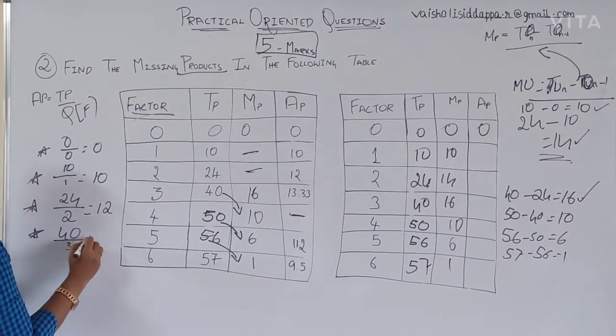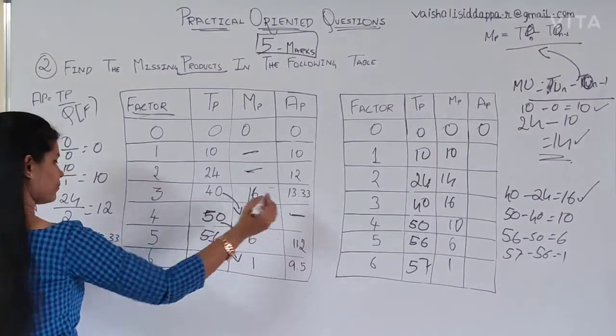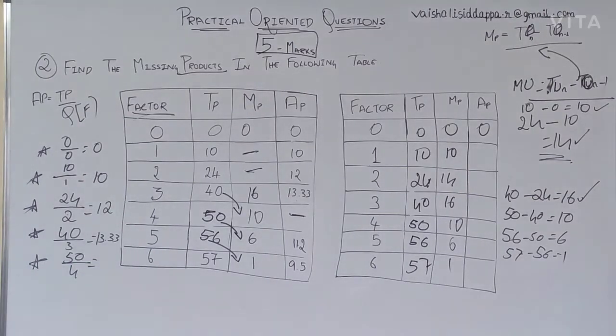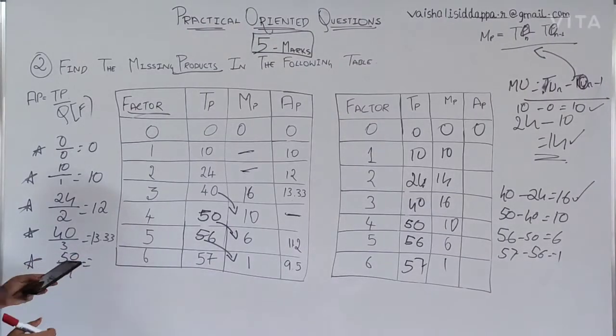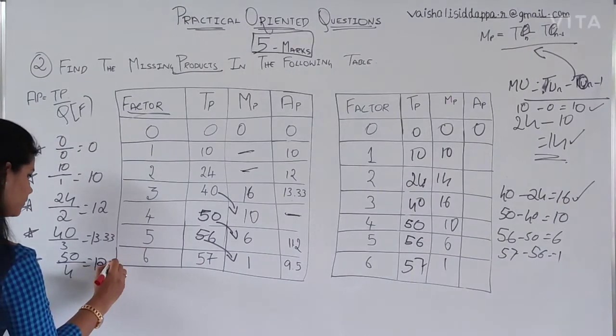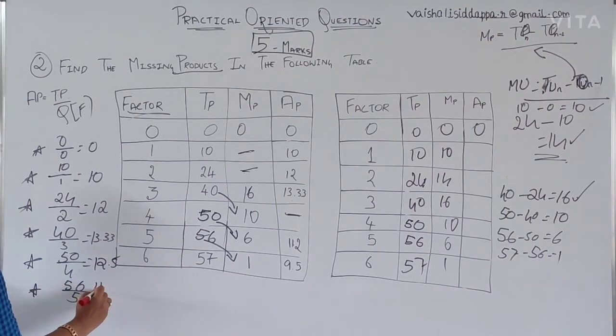40 by 3 is nothing but 13.33. Clear? 50 by 4. What is the answer? 50 by 4. 12.5. Now, the last one is 57. Okay, sorry. 56. 56 by 5. 56 by 5 is 11.2.